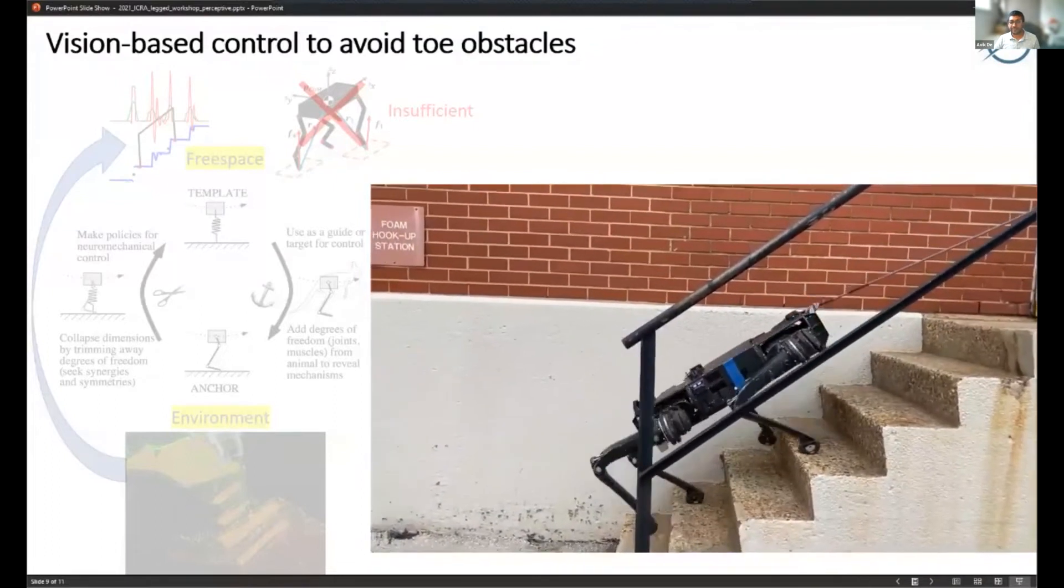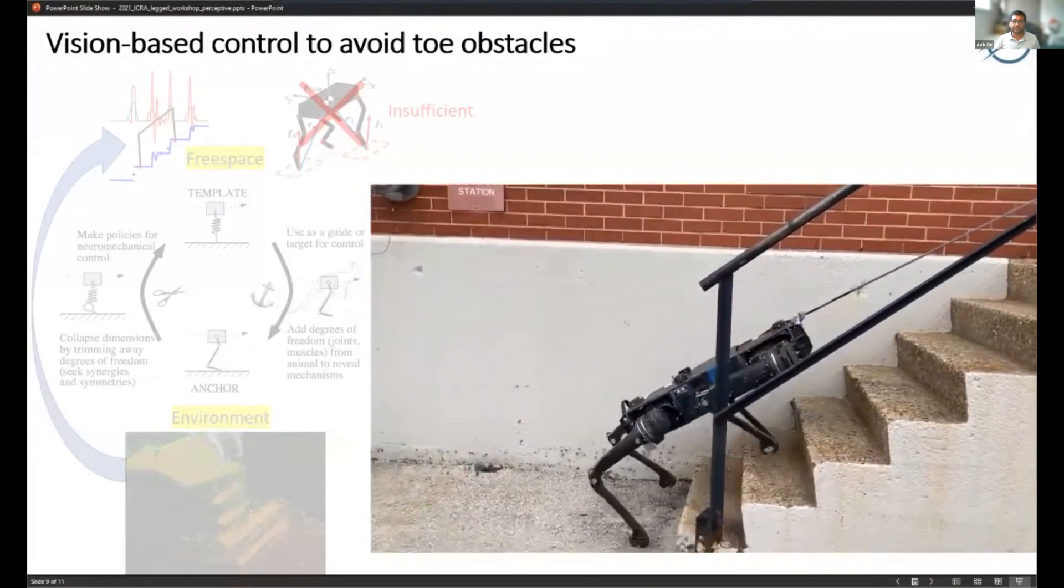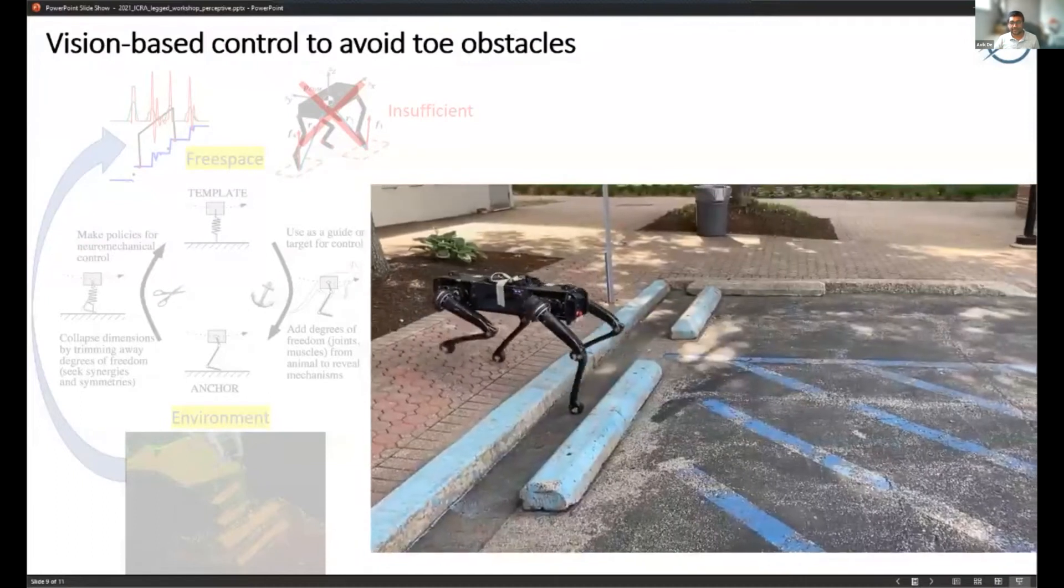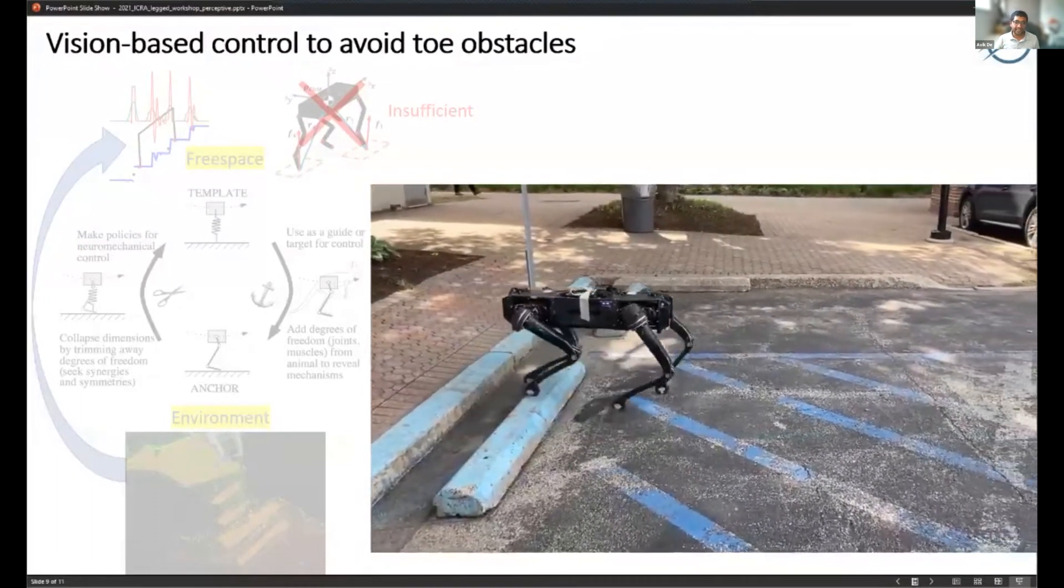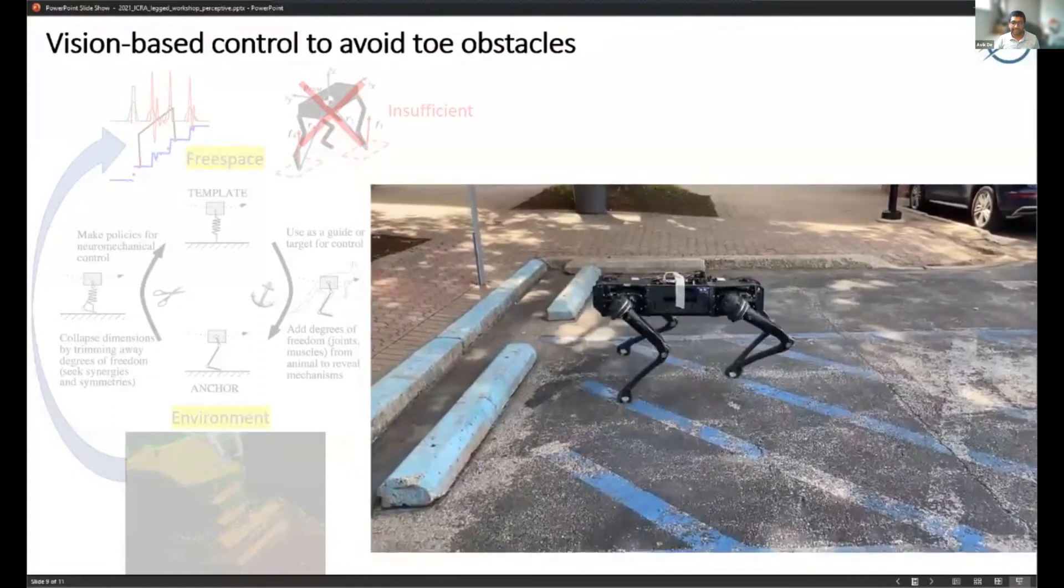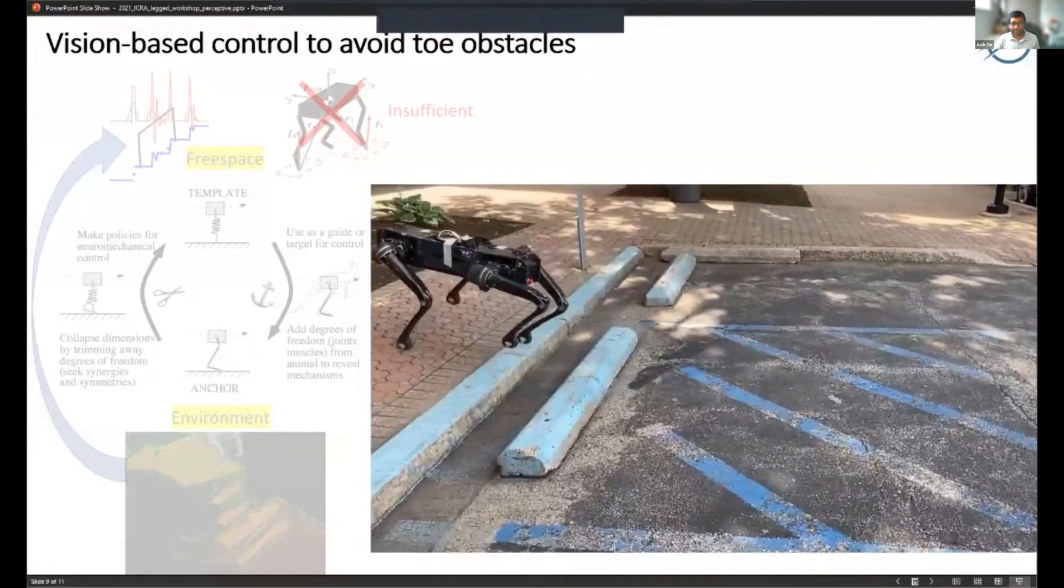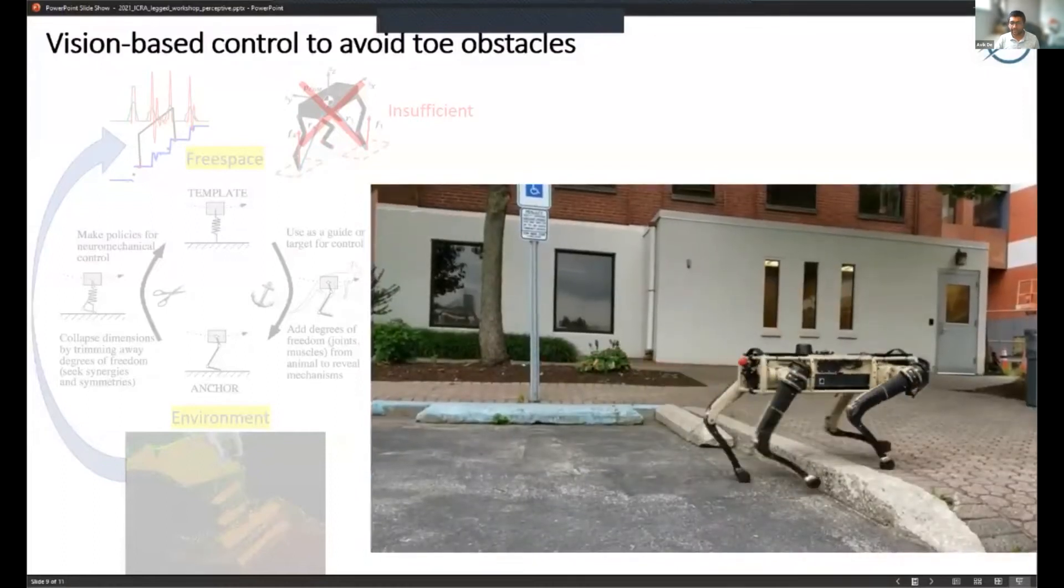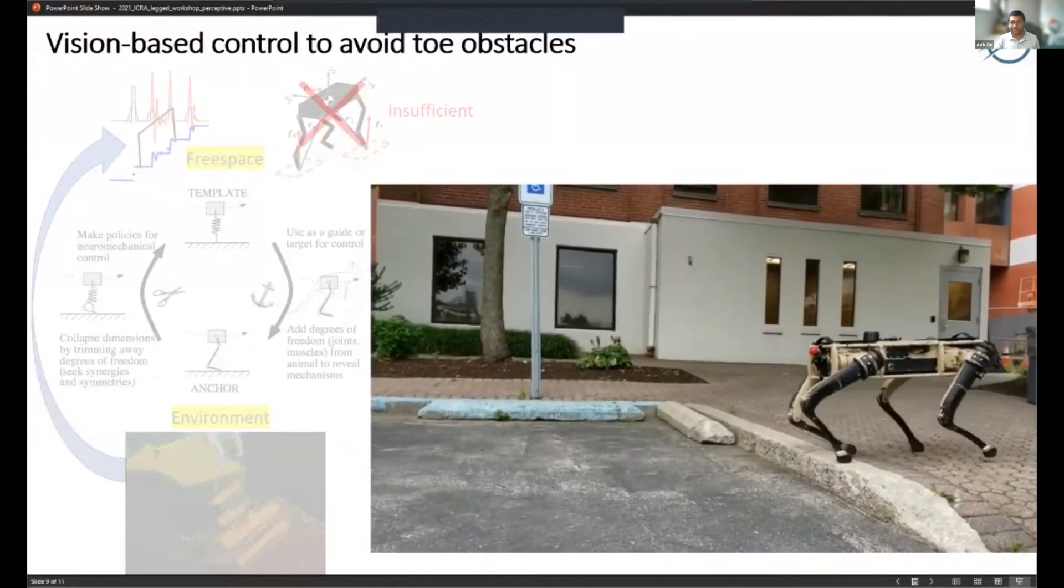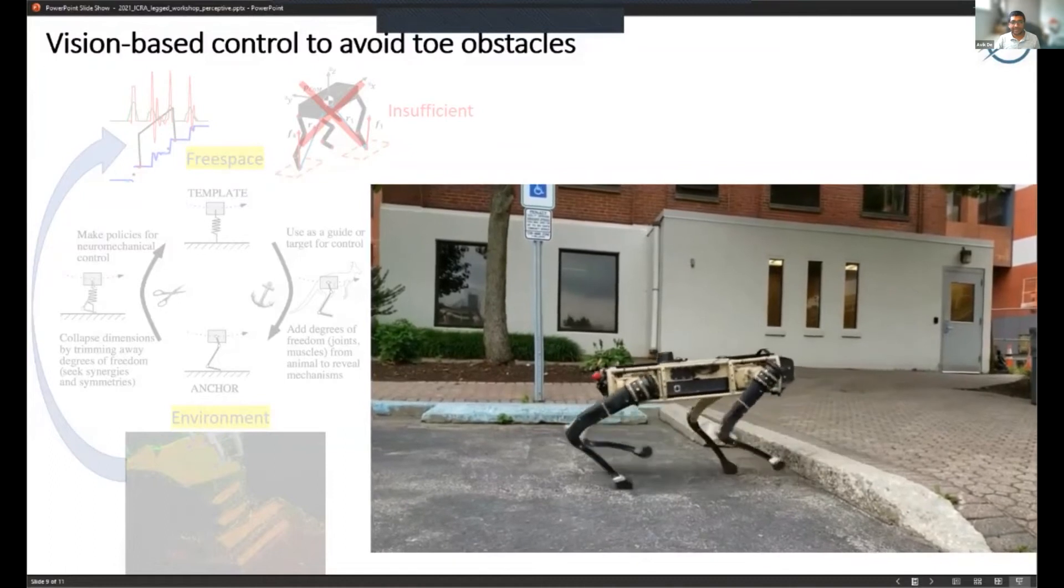We're using a hierarchical approach with a planner that considers the body and toe obstacles first and then combining that hierarchically with the same blind controller that I talked about before. But we're working on different architectures as well to see what makes the most sense.